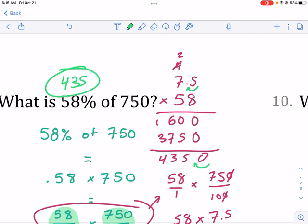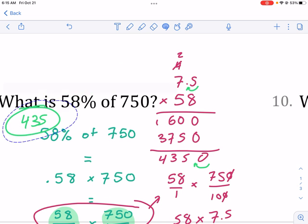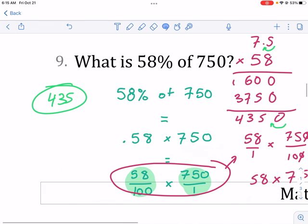And again, if you put this on your calculator, you can see that I have it demonstrated here. Perfect for a calculator right here. You're going to get the same thing. You're going to get 435.